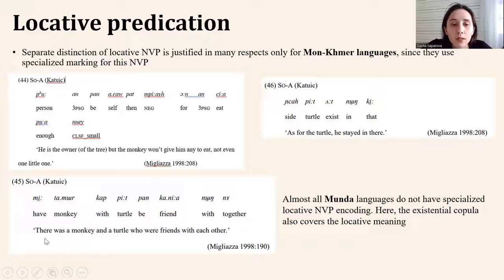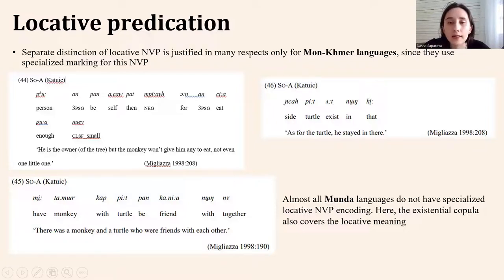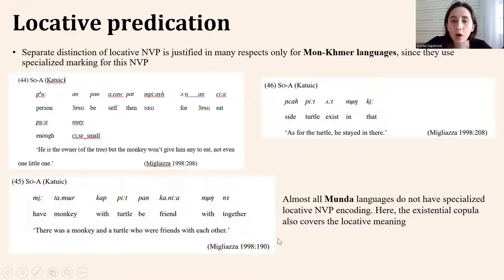In example 45 — 'there was a monkey and a turtle who are friends with each other' — it is existential predication; copula 'me' is used. And in example 46 — 'as for the turtle, he was there' — copula 'ot' is used for locative predication. We cannot use different copulas in this example; only 'ot' is possible. Almost all Mnong languages do not have specialized locative nonverbal predication encoding, and in these languages the existential copula also covers locative meaning.